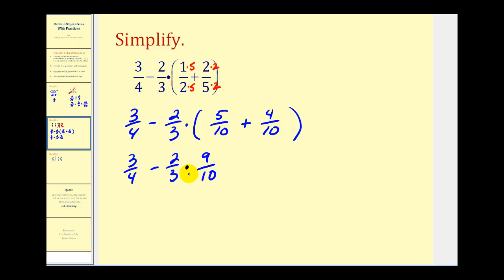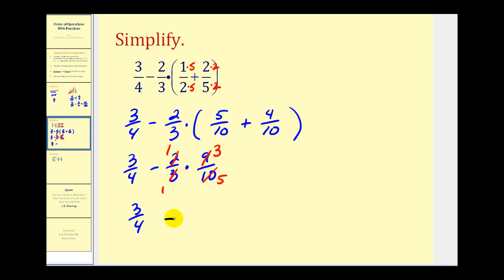Next, in the order of operations we multiply and divide before we add or subtract. So we find this product, and first let's simplify. We have a three and a nine — one three in three and three threes in nine. And there's a common factor of two — one two in two and five twos in ten. So this simplifies to three-fourths, and the result of the multiplication is three-fifths.